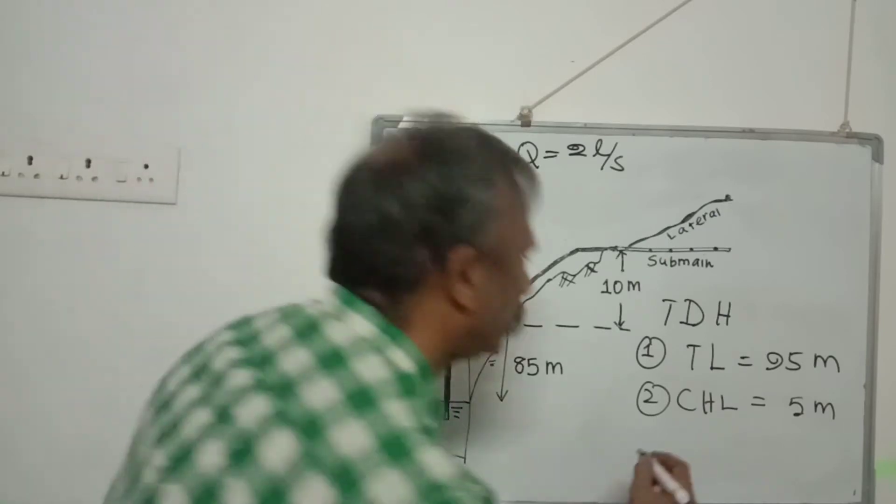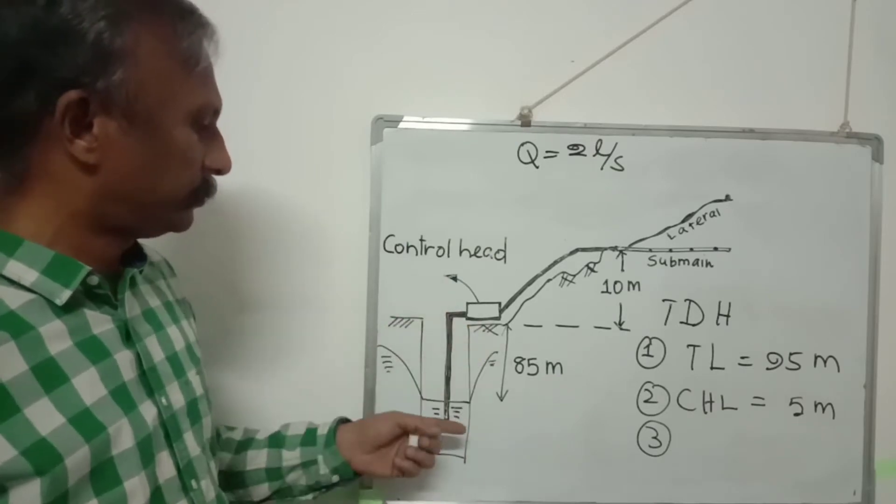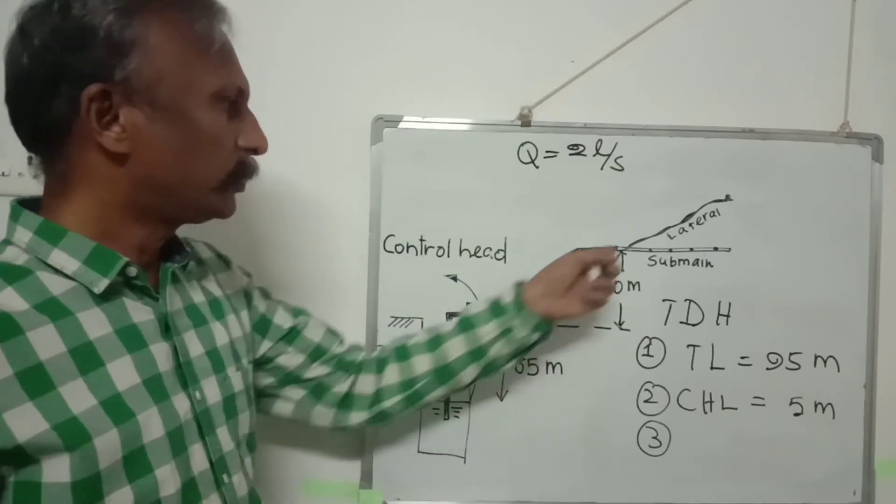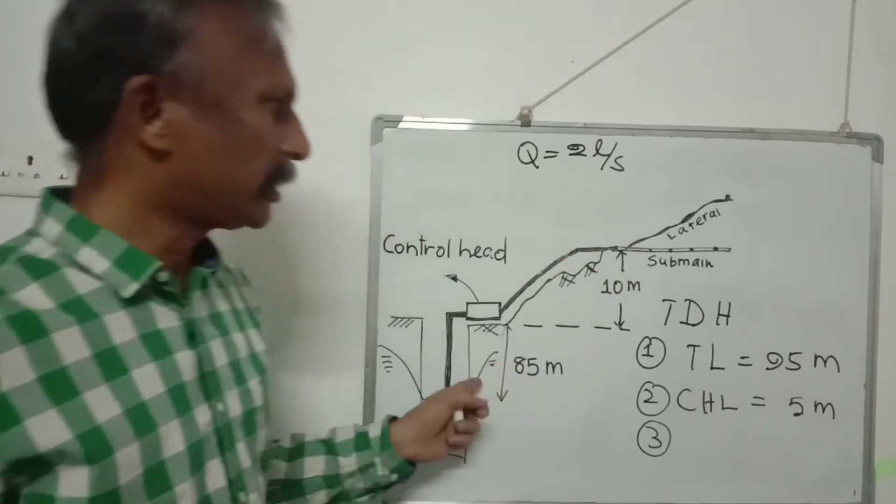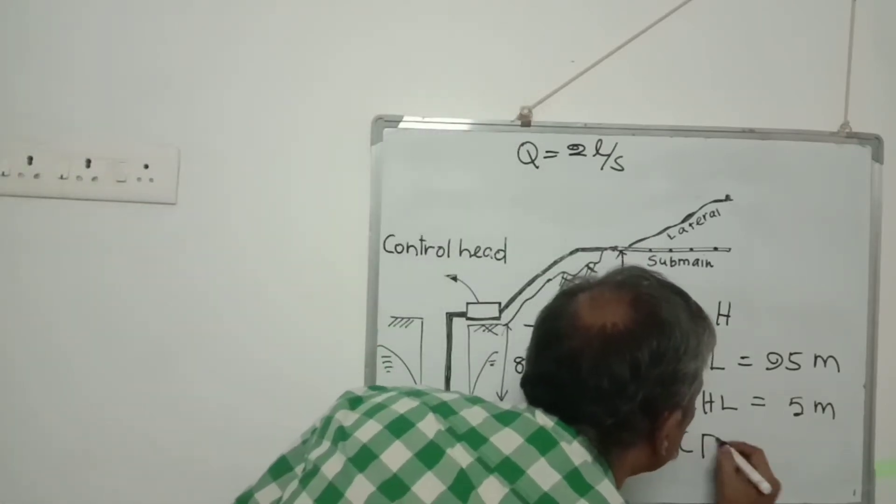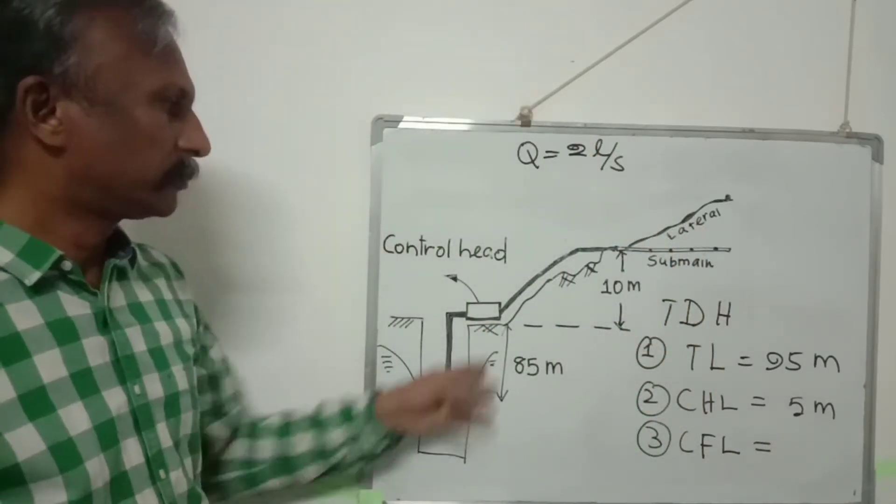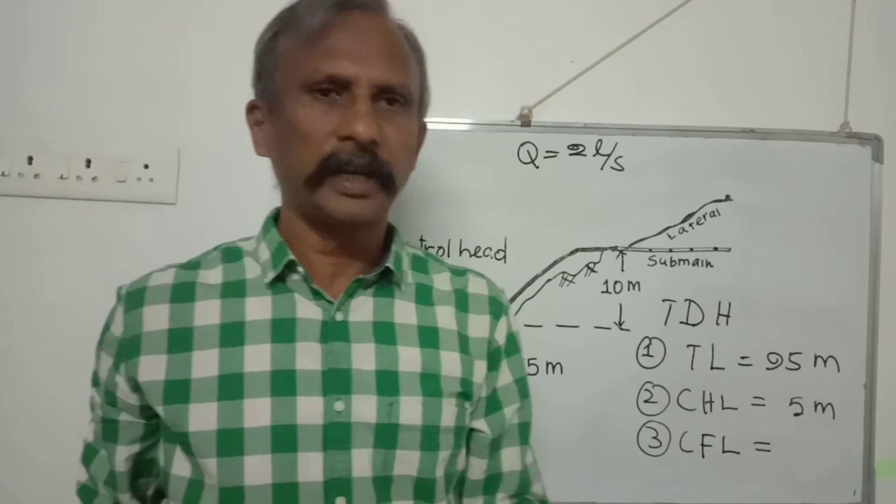Next is total conveyance loss - conveyance friction loss from foot valve to the start of the critical submain. How can it be calculated? This one we can approximately calculate.